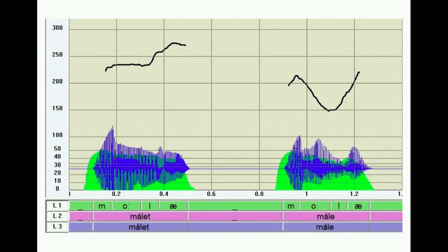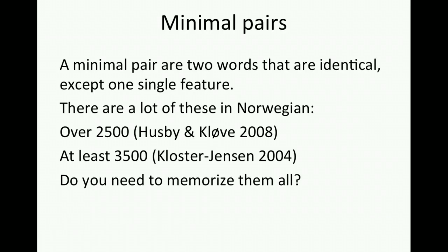But why is it important? The words we just saw are an example of what we call a minimal pair. Two words that are identical except for one single feature. In this case, pitch variation. According to these studies, there are somewhere between 2,000 and 4,000 of these in Norwegian. Does this mean you should memorize all of these? No.